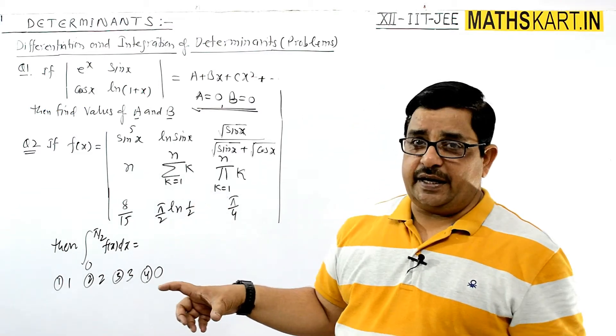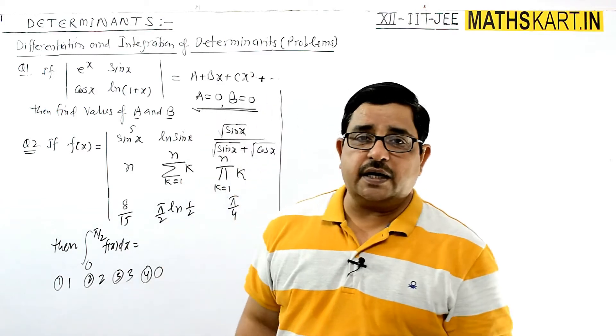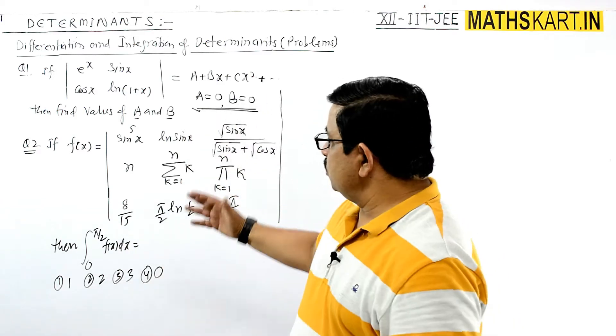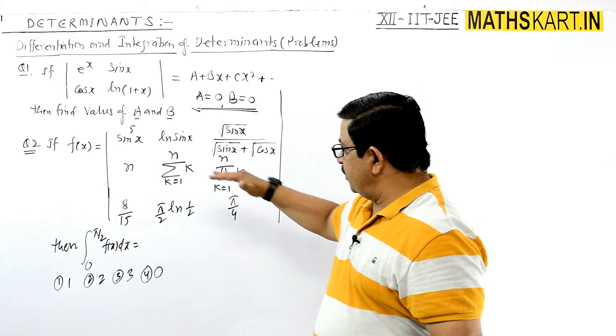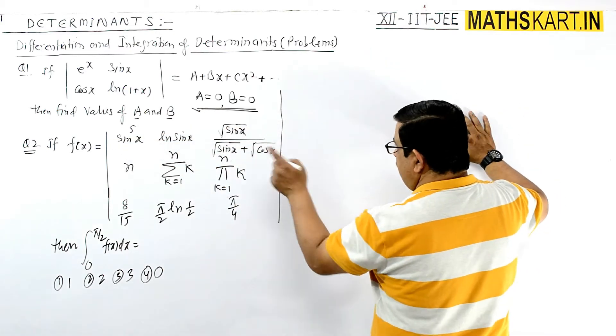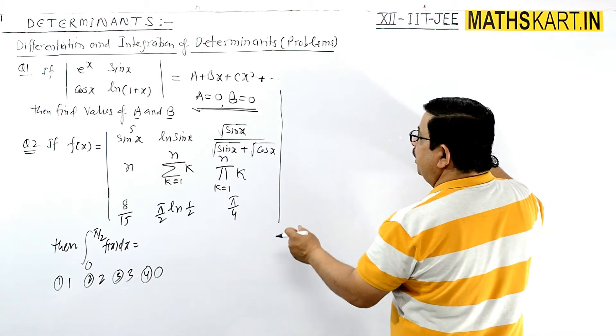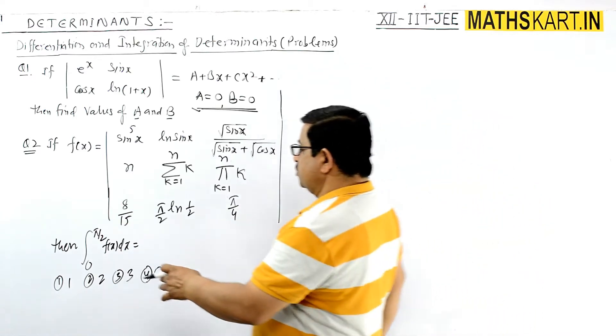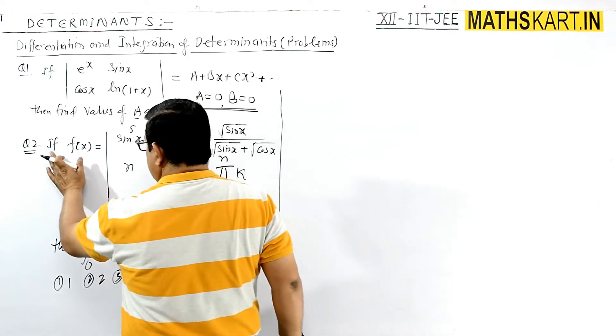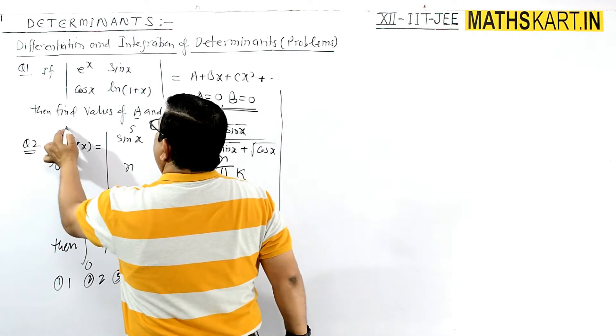Then we have to find out the integration from 0 to pi by 2 of fx dx. So we have to find out this, this is 0 to pi by 2, integrate.